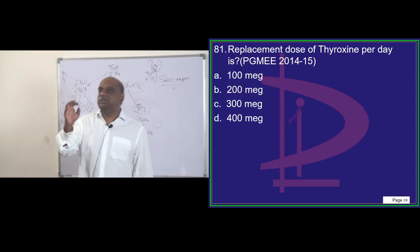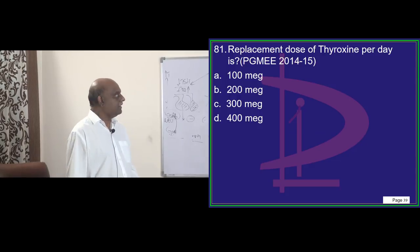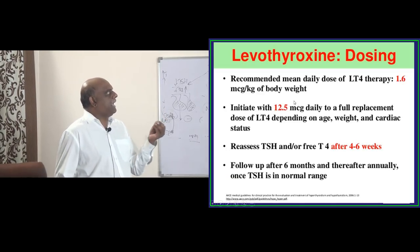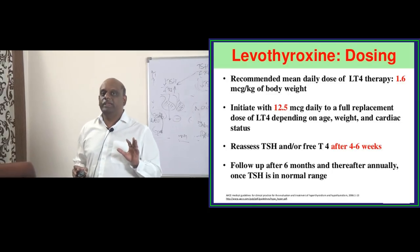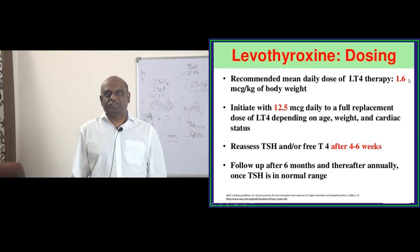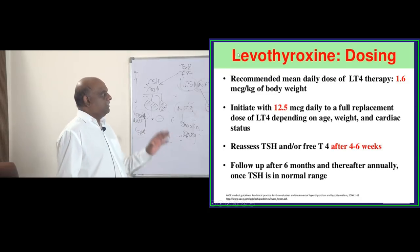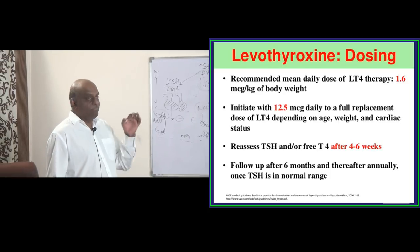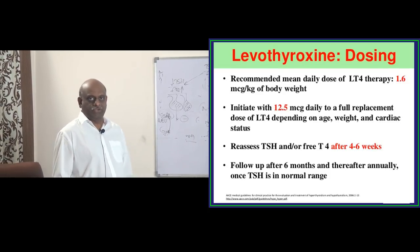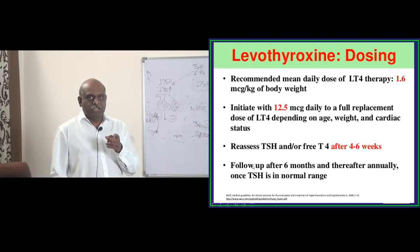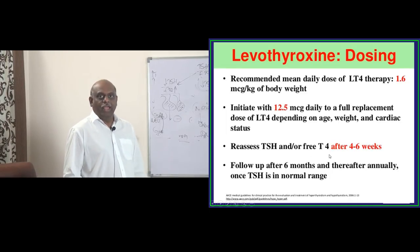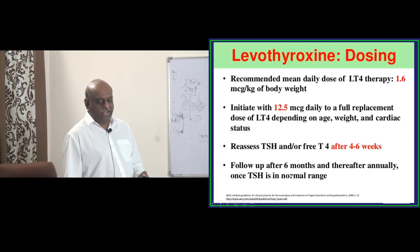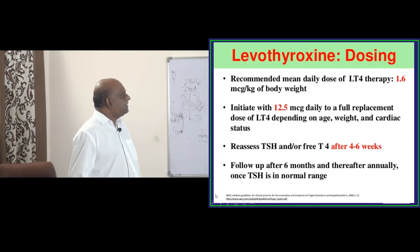What is the replacement dose of thyroxine per day? It is per kg body weight — 1.6 micrograms per kg body weight. For a 60 kg person, that is around 100 micrograms. Ideally we start at 12.5 micrograms daily, and based on age, weight, and cardiac status, we are careful with dosage. Once you start thyroxine, assess TSH levels within 4 to 6 weeks, then follow-up after 6 months, then annually once TSH is in the normal range.